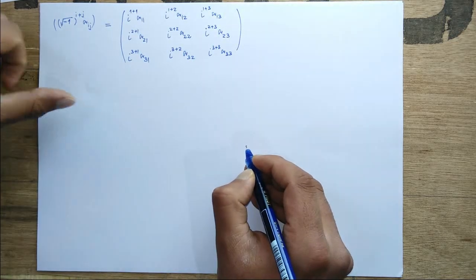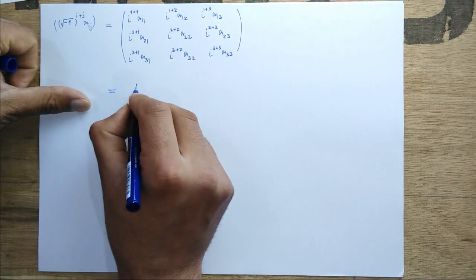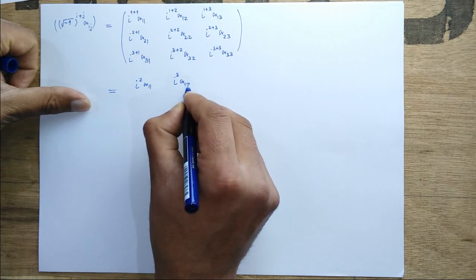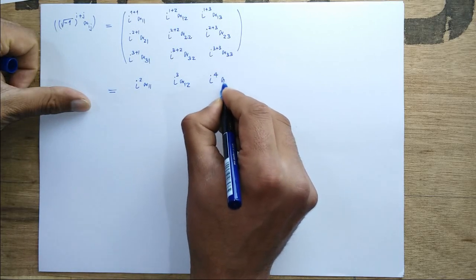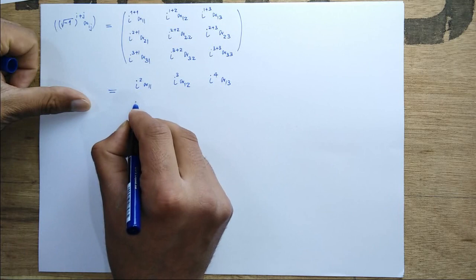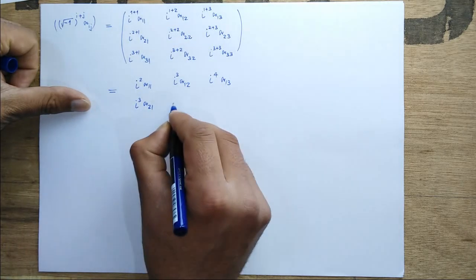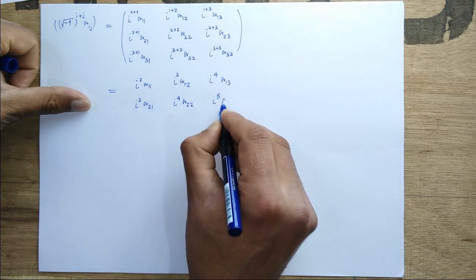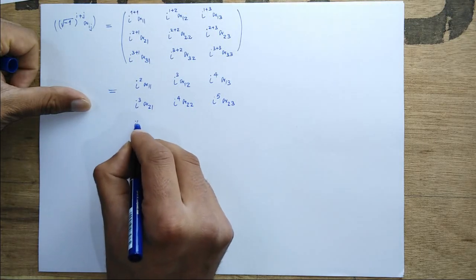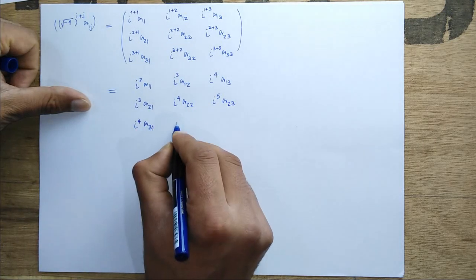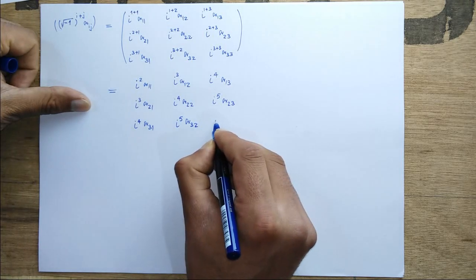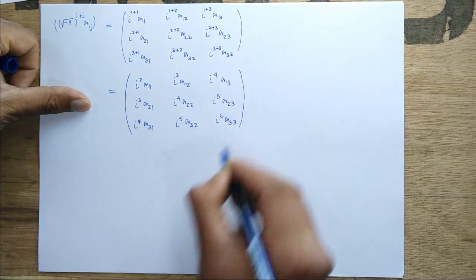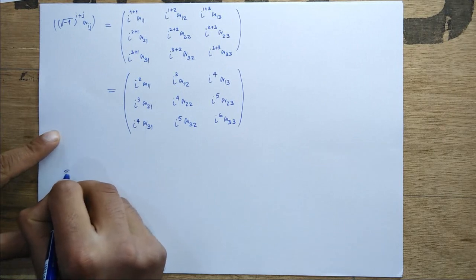This is the matrix. Now we will find the determinant of (√-1)^(i+j) * a_ij. We can factor out iota^2 from row one, iota^3 from row two, and iota^4 from row three. After factoring, the remaining matrix has entries a11, iota*a12, iota^2*a13 in row one; a21, iota*a22, iota^2*a23 in row two; a31, iota*a32, iota^2*a33 in row three.